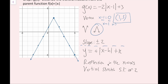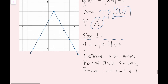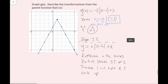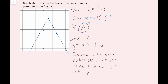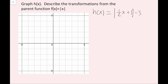Last, the reason I like doing it this way is that the translation is just going to be the vertex. My vertex is (1, 3), which means I translate one unit right and three units up. So we've successfully graphed g of x and described the transformations from the parent function f of x equals the absolute value of x. For the next example, we're going to graph h of x and describe the transformations from the same parent function — a very similar type of question.